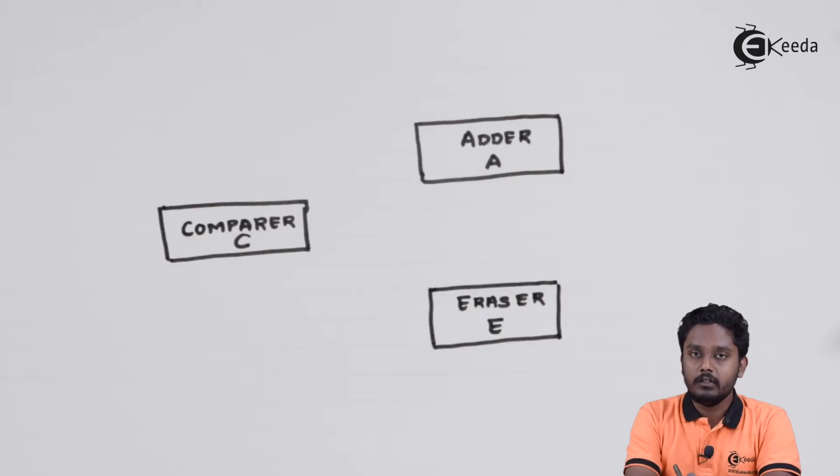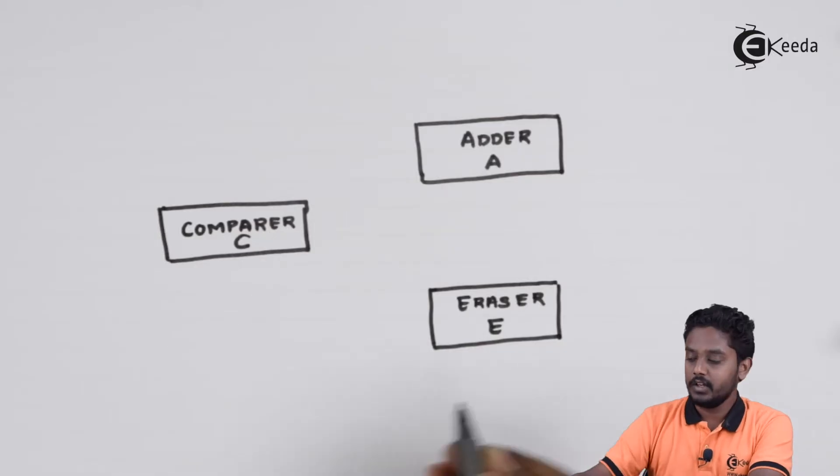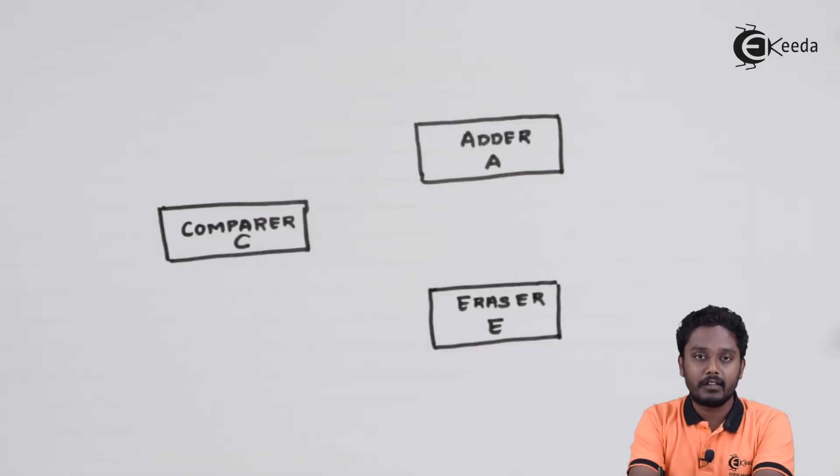Over here, I have shown three Turing machines. Turing machine C which acts like a comparator, Turing machine A acts like an adder, Turing machine E acts like an eraser. Let's see how to interconnect them to get the required complex Turing machine.